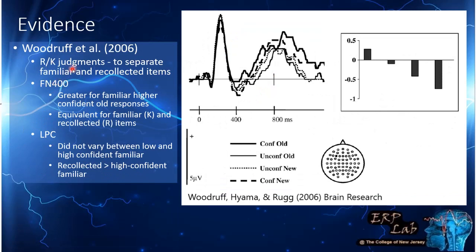Woodruff et al. also used R/K judgments but additionally looked at confidence. They found greater FN400 amplitude for highly confident familiar old responses, and it was equivalent for familiar and recollected items by R/K judgment — suggesting the FN400 was influenced by confidence. However, for the LPC, confidence did not vary between low and high confidence; instead, recollected items were more positive than highly confident familiar K-judgment items, again associating recollection with the LPC and familiarity with the FN400.